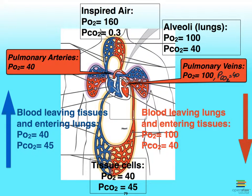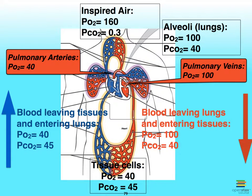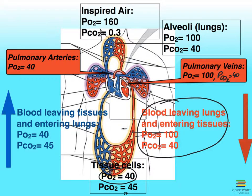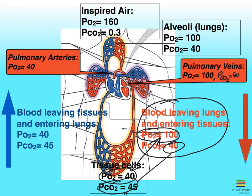So this blood now is going to, via the aorta, make it to the tissues. And if we compare the partial pressures of our gases between the tissues and the blood, then we see our nice pressure gradient for oxygen, while that for carbon dioxide is lower again — and we know that's not a problem because of the much higher solubility for carbon dioxide.